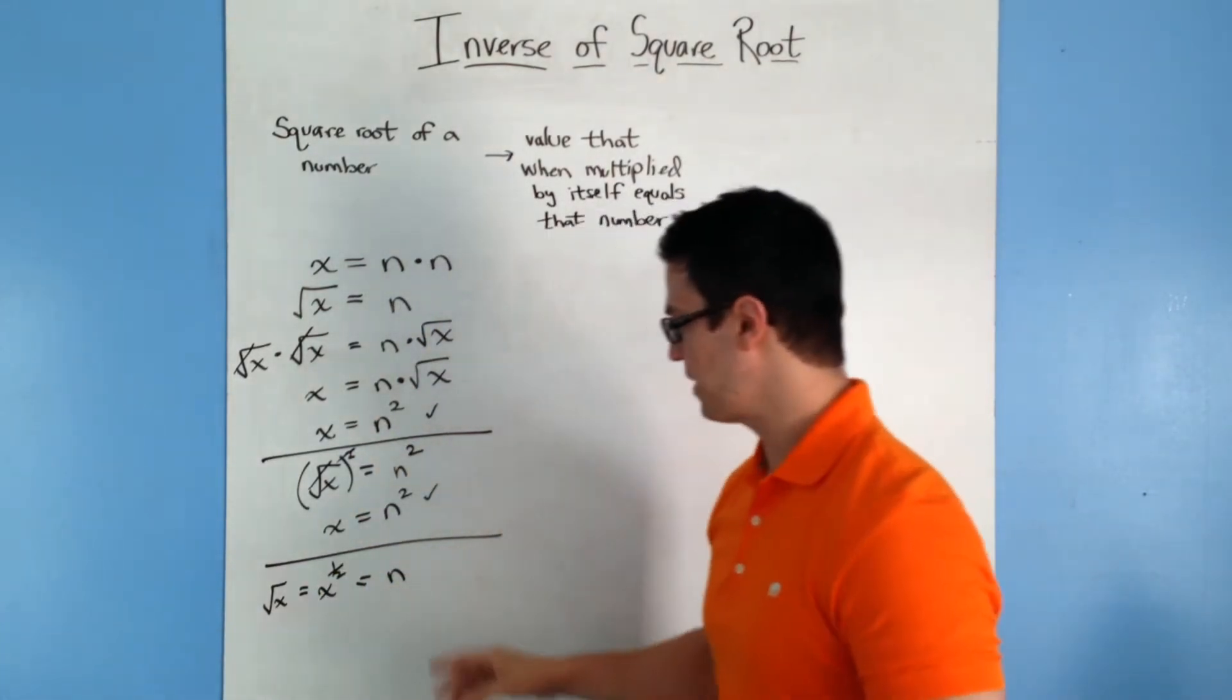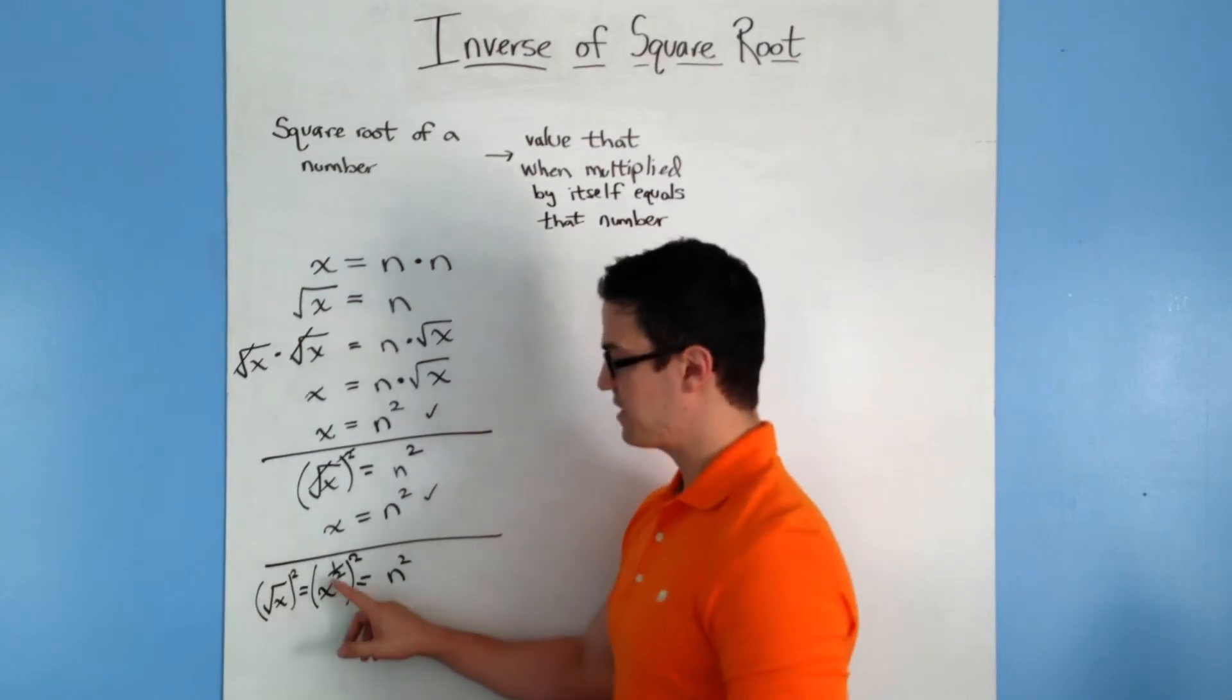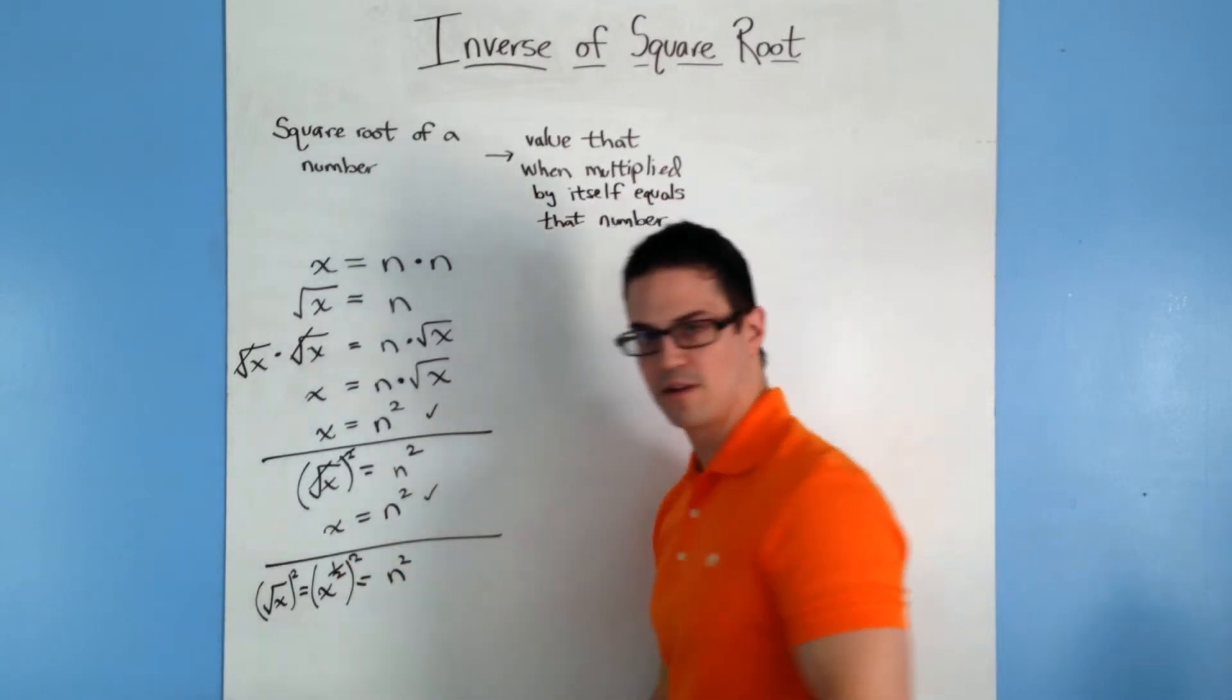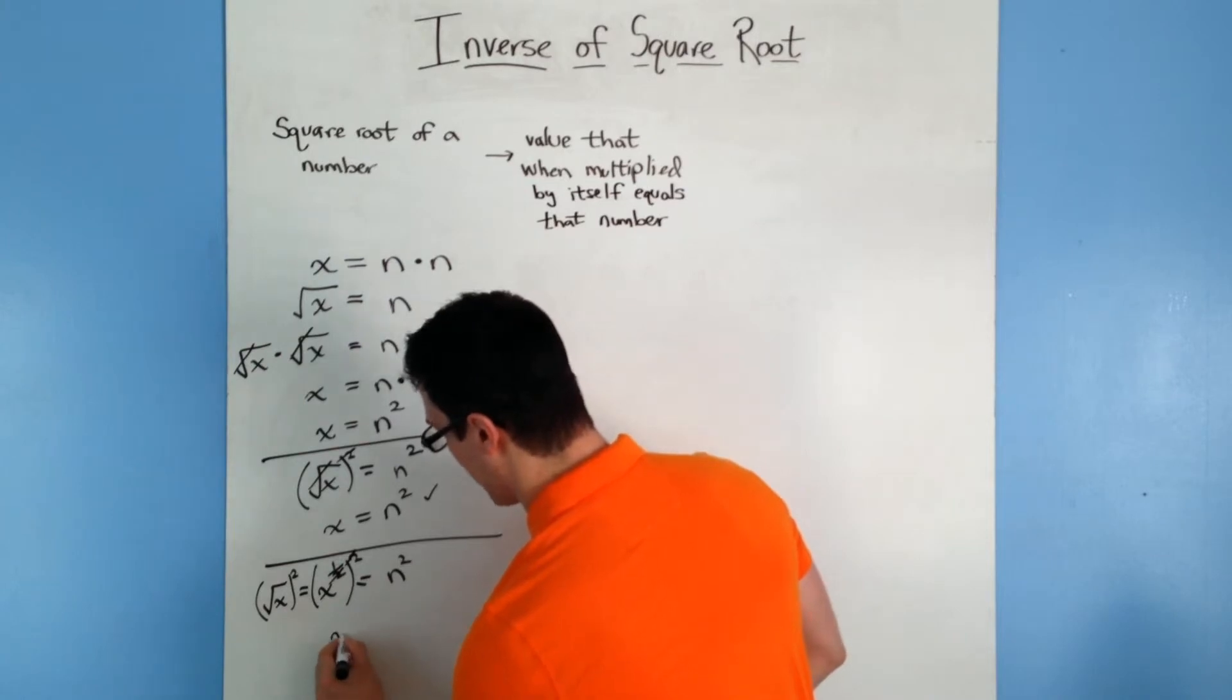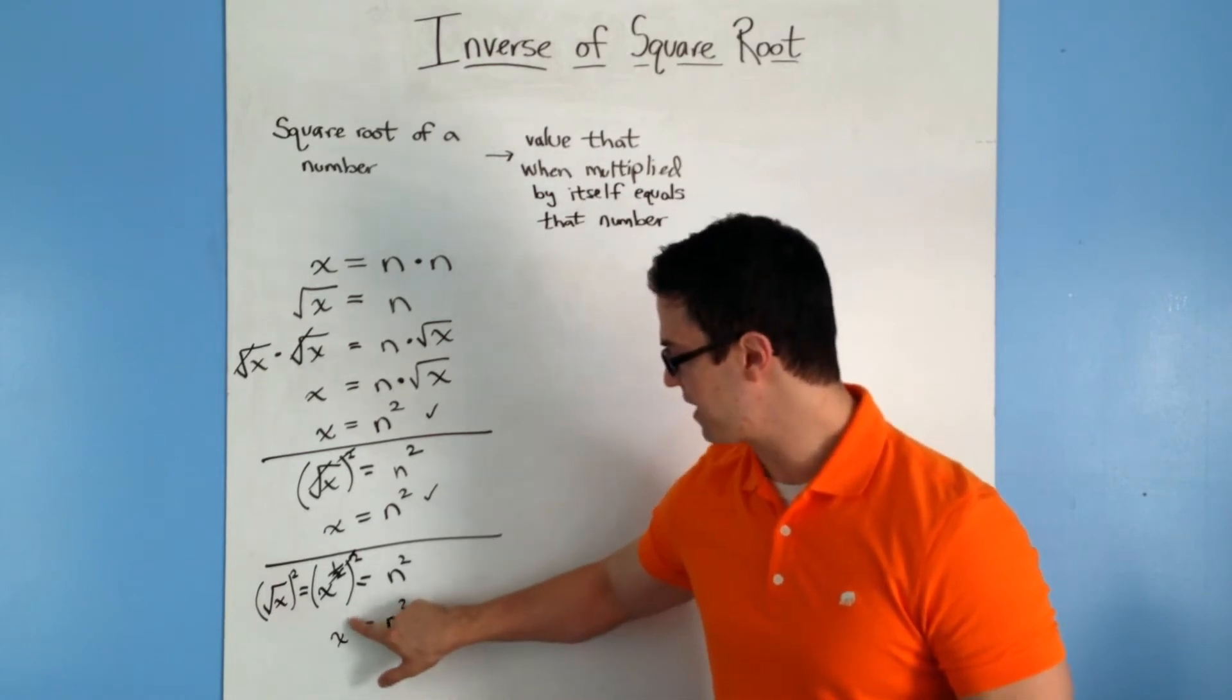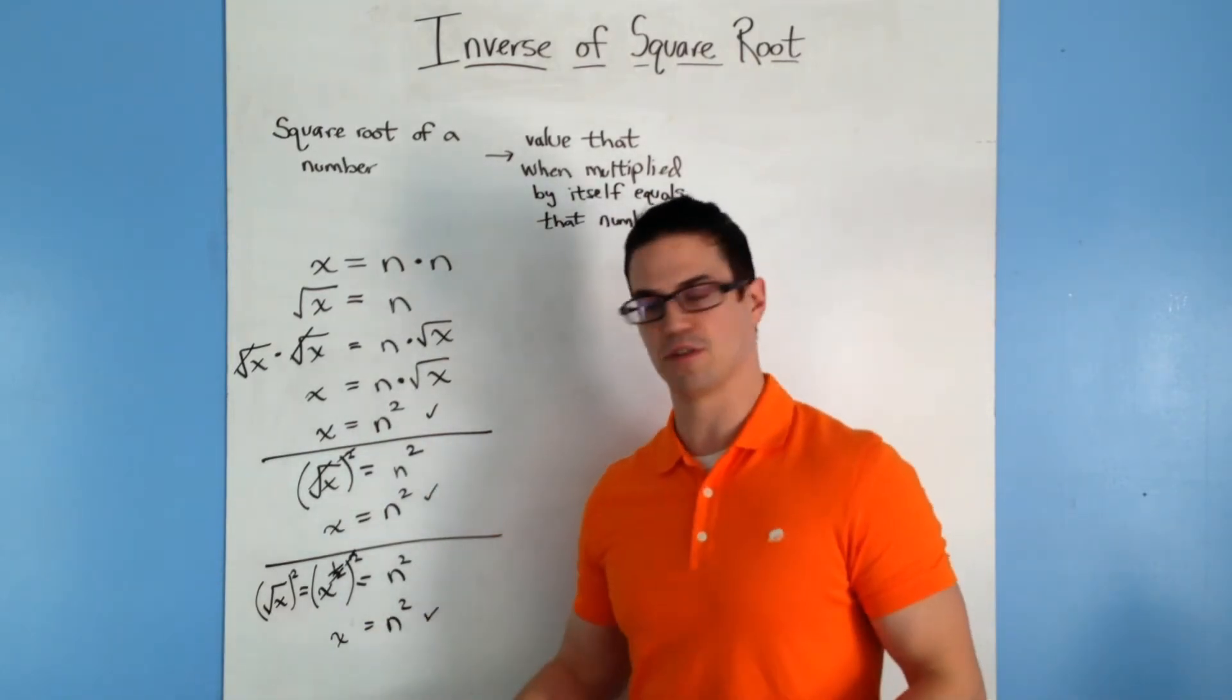Now what you can do is we can square both sides of this equation, just like we did up here. And you end up with x to the 1 half power squared. If you remember your exponent rules, you can multiply these two numbers together, the power of a power, they multiply the exponents, and 1 half times 2 is equal to x to the 1 power equals n squared. Now you know that x to the 1 power is the same thing as saying x, so I'm just going to erase that 1, and you end up matching the other two examples for how to find the inverse of a square root.